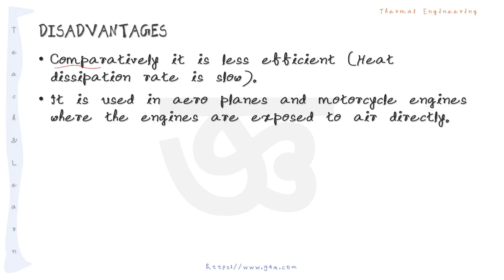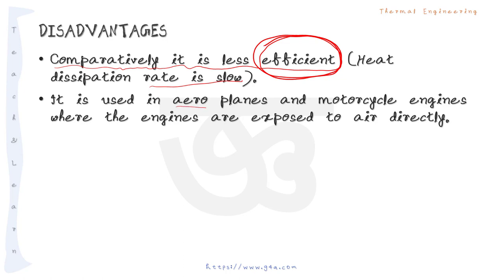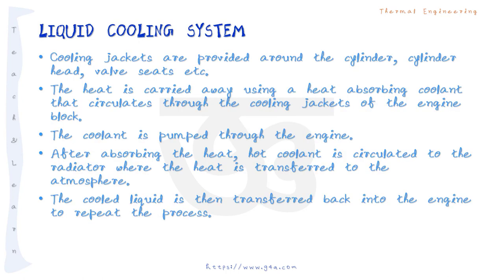The main disadvantage of air cooling is that it is comparatively less efficient - the heat dissipation rate is less. That is why air cooling is used in aeroplanes, motorcycles, and scooters where the engine is directly exposed to air. For stationary engines, air cooling system is not suitable at all. For automobiles, vehicles, or aeroplanes it gives some efficient cooling.